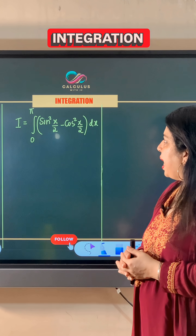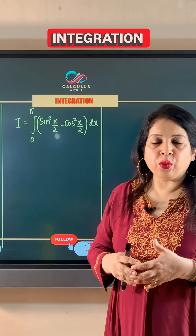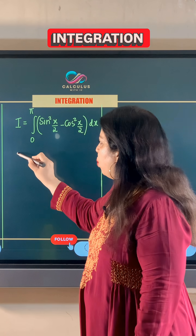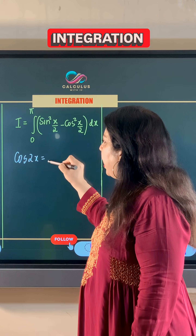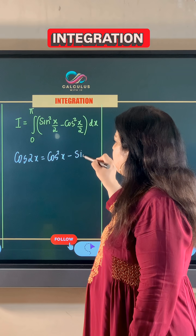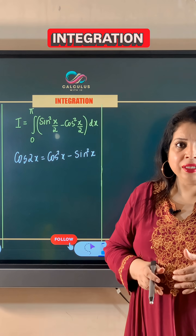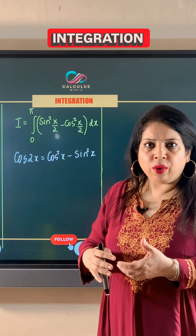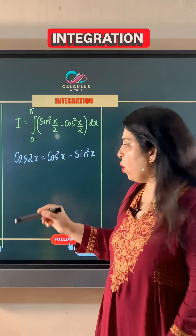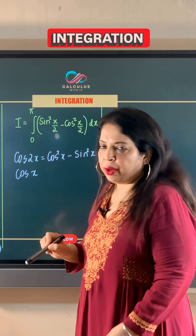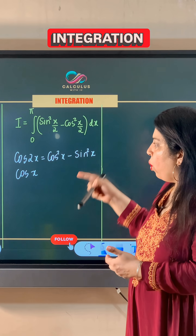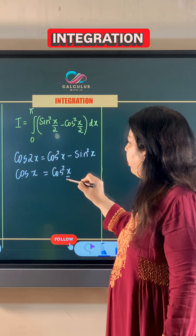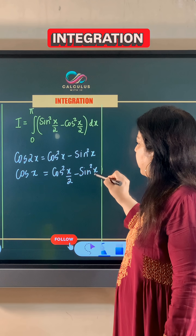In this case, sin²(x/2) minus cos²(x/2) is given. We have one identity for cos 2x, which is cos²x minus sin²x. But our angles are in half-angle form, so we can make all the angles equal to half. Instead of cos 2x, we write cos x — taking half of 2x — so on the right-hand side, each angle is halved: cos x = cos²(x/2) minus sin²(x/2).